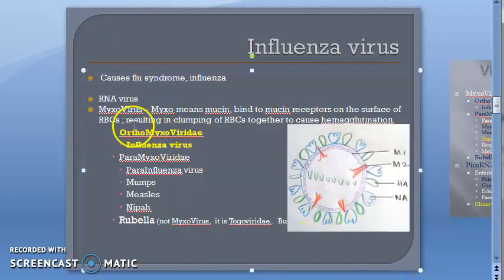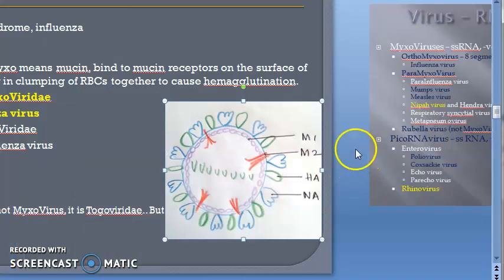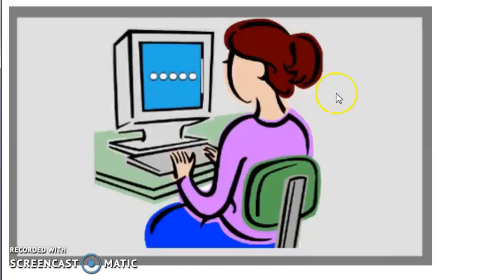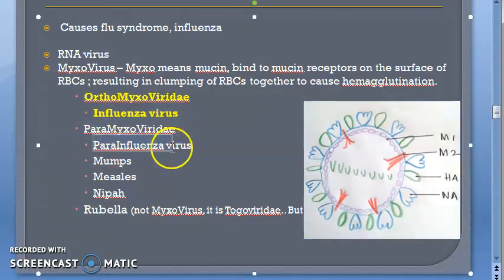What exactly does mixovirus mean? Mixo actually means mucin. This virus binds to the mucin receptors on the surface of RBCs, resulting in the clumping of RBCs — that is hemagglutination. So influenza virus will cause hemagglutination. We have seen that it is an orthomyxovirus.